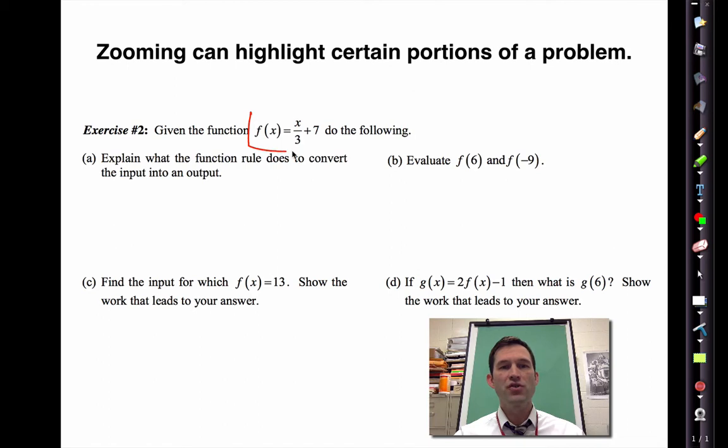Let's take a look at another function problem. I guess I'll just stick in red. Here I give a function. Number one is an explanation so I'm not going to go through that. Let's say I get to letter B where I ask to evaluate f of 6 and f of negative 9. If I evaluate f of 6 and I'm going to leave it on the full screen and I do 6 divided by 3 plus 7, 2 plus 7, and I get 9, well that's fine.